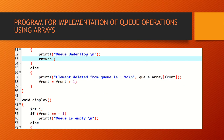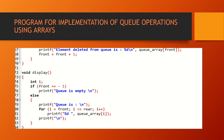Next is display. The remaining elements are displayed through the display operation. int i — i represents the remaining elements in the queue after insertion and deletion. If front equals minus 1, it prints queue is empty — there are no elements to display. Otherwise it jumps to the else statement and prints the queue. For i equal to 0, i less than or equal to rear, i++ — it traverses all the elements in the queue and prints queue array of i. This is about the display operation.